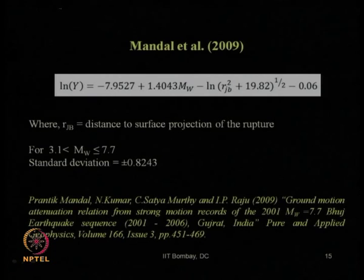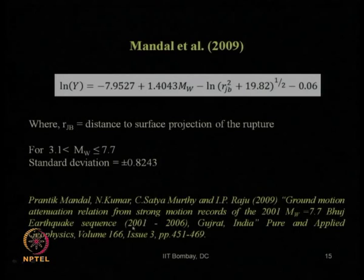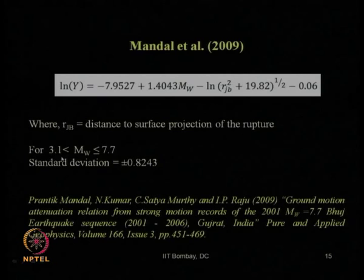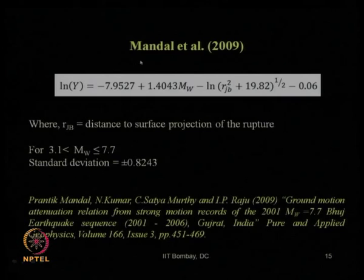Mandel et al. in 2009 — Prarthana Mandal and their research group — developed an attenuation relationship for the Bhuj region of earthquakes from 2001 to 2006. They considered magnitudes within the range 3.1 to 7.7. R_jb is the distance to the surface projection of the rupture point, and they proposed an equation for earthquake acceleration PGA.